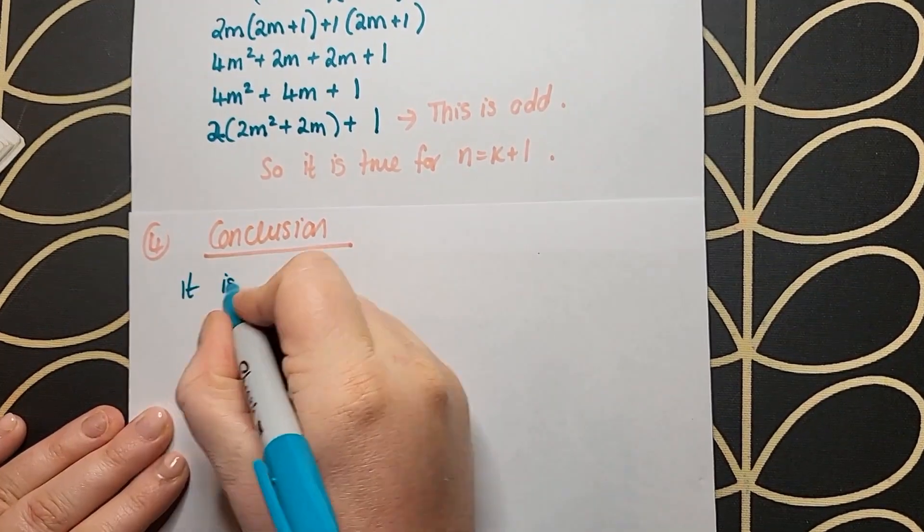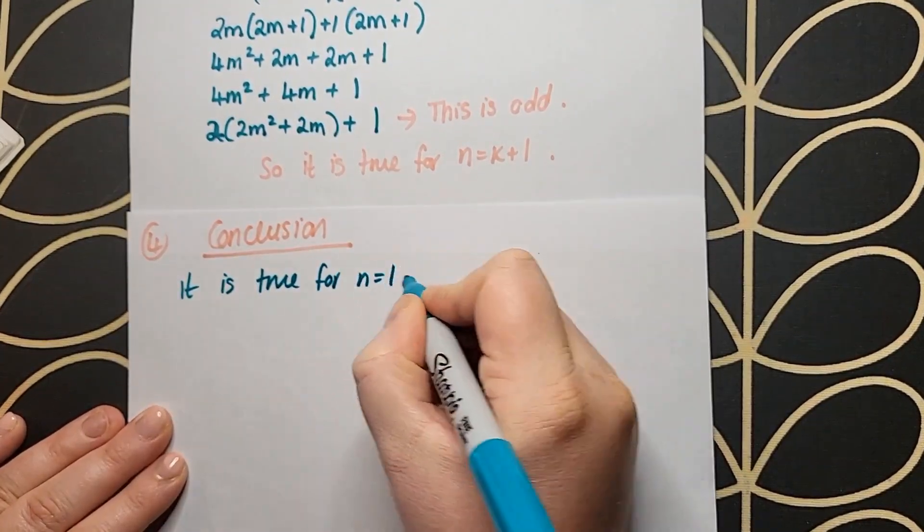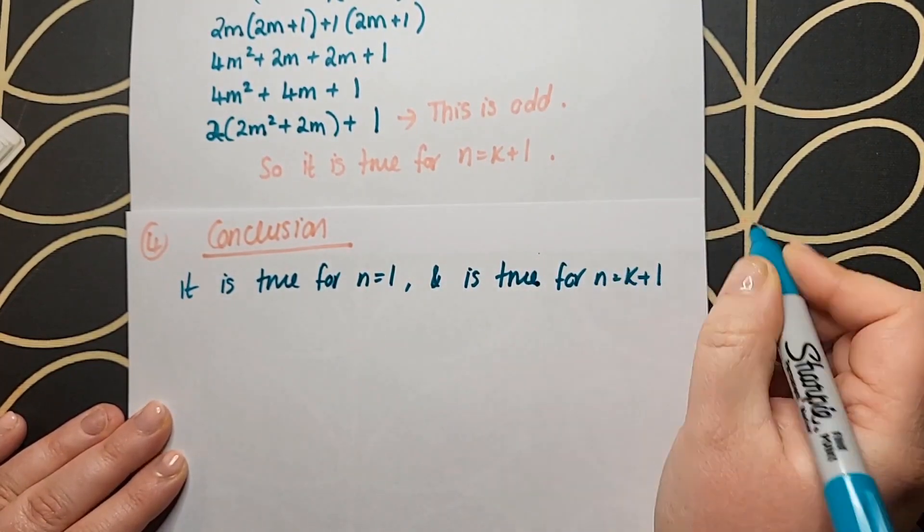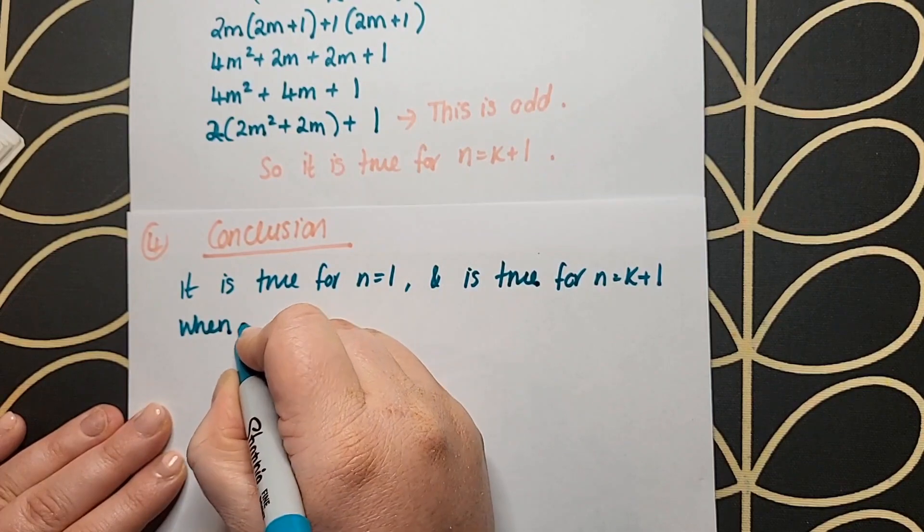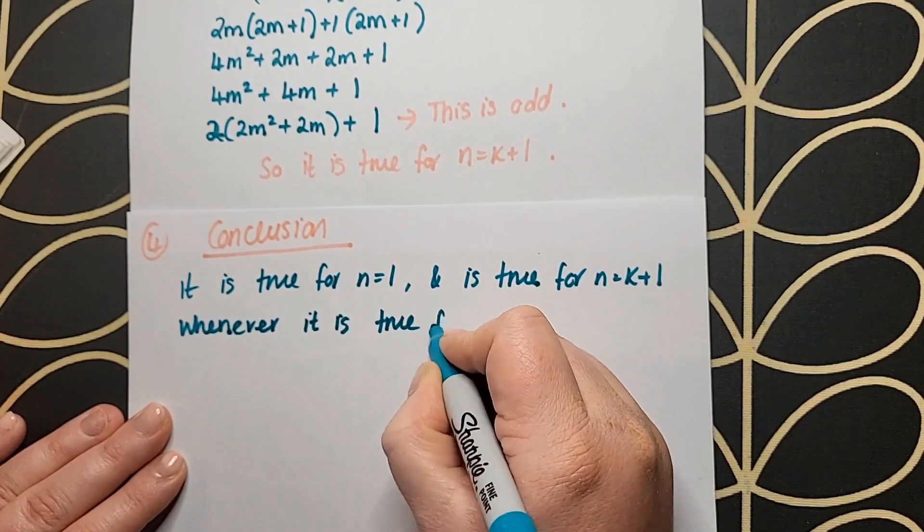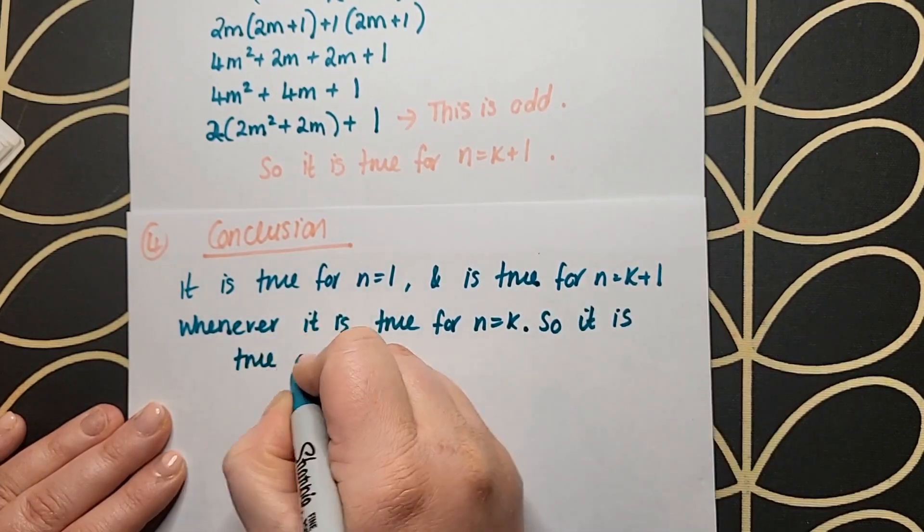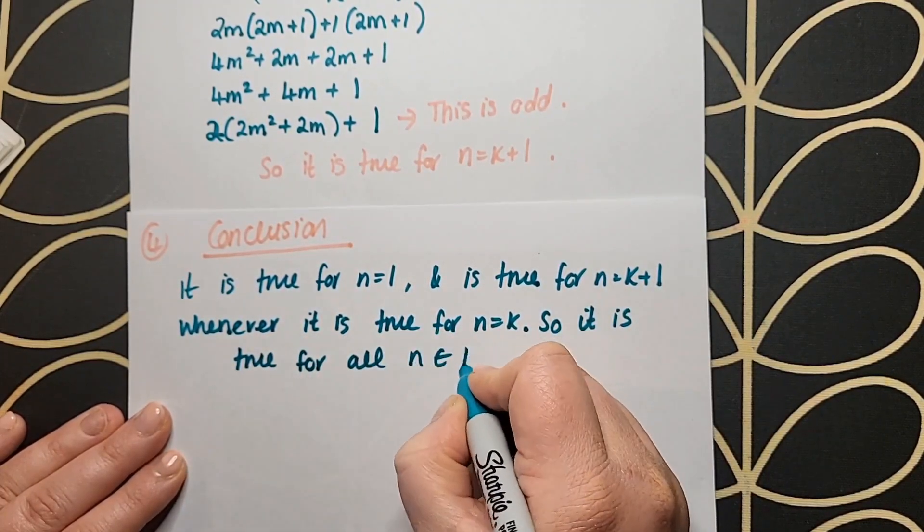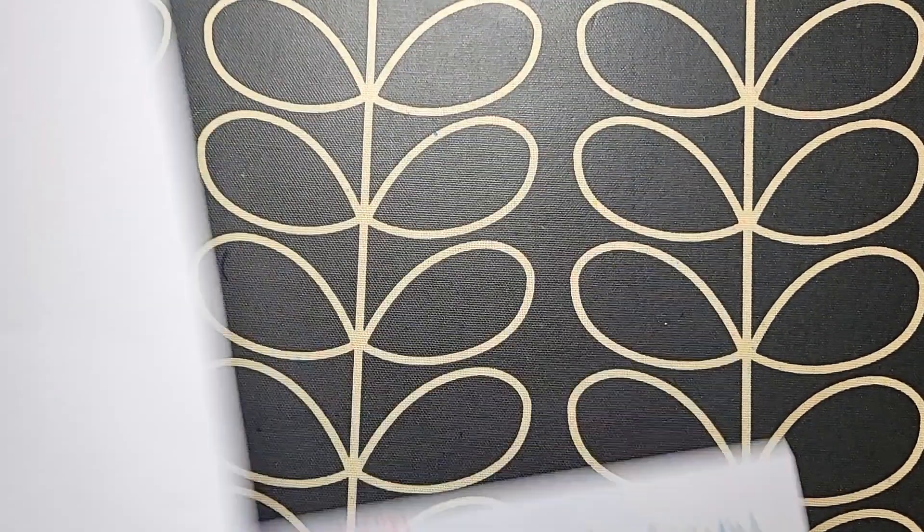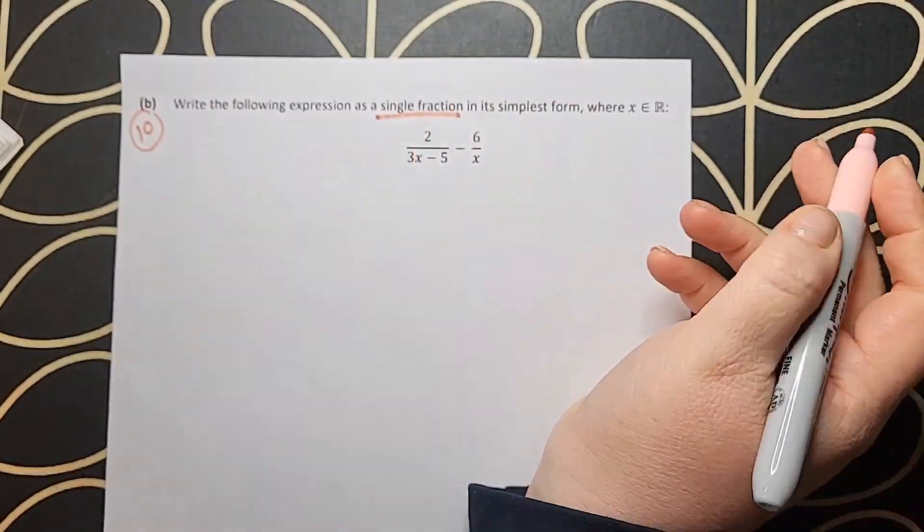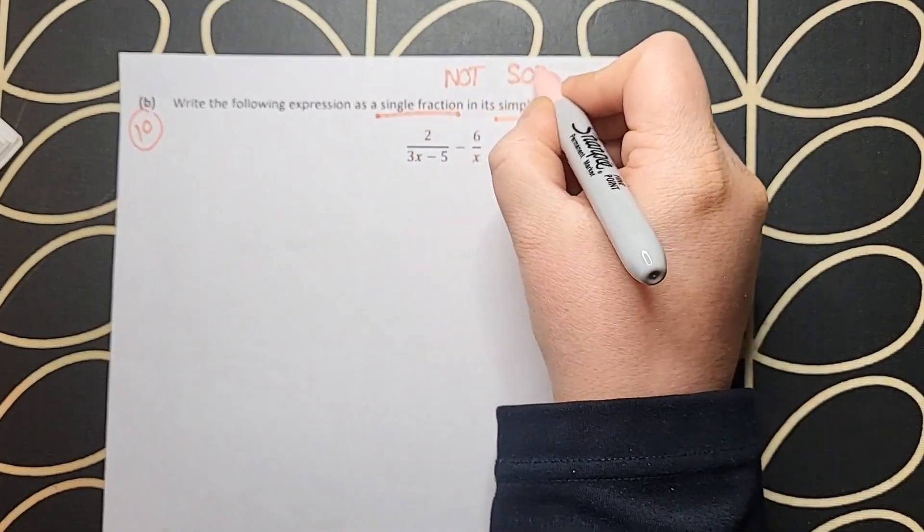So then therefore it's true for all n values that are an element of the natural numbers. There can be slight variations in your conclusion wording and that's perfectly fine, but you need to state four things: that it's true for n equals 1, true for n equals k, true for n equals k plus 1, and therefore true for all n values. Make sure that's included whatever way you word it. There was 10 marks going for that question.